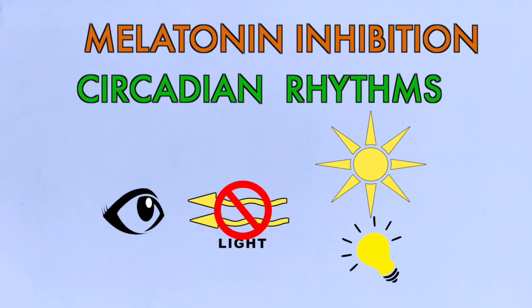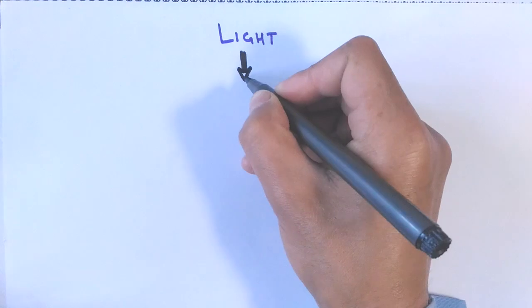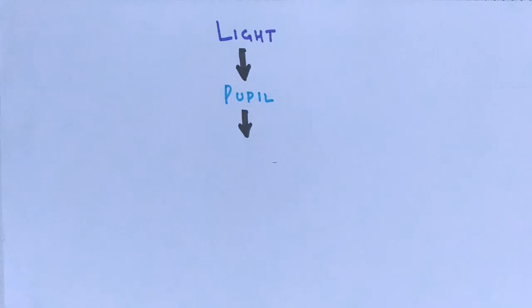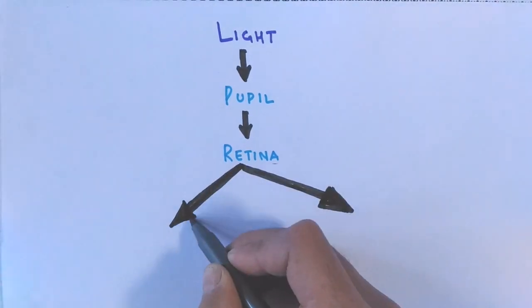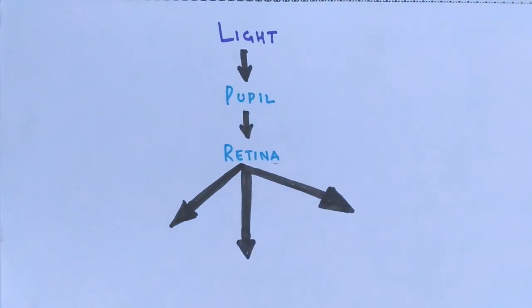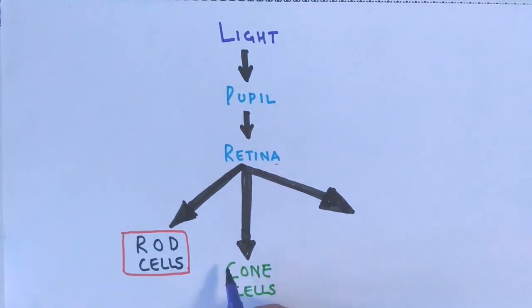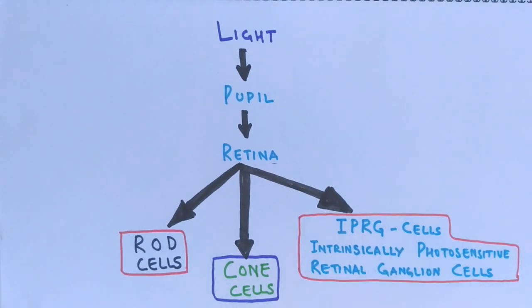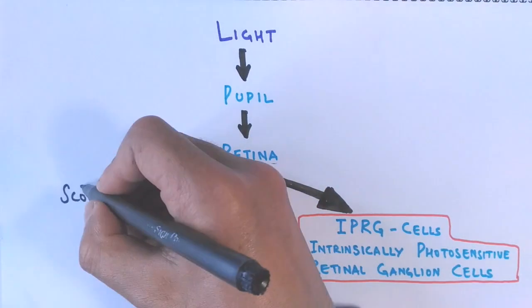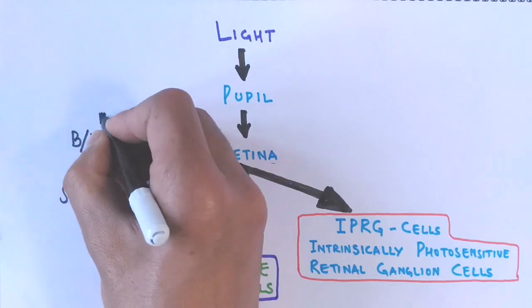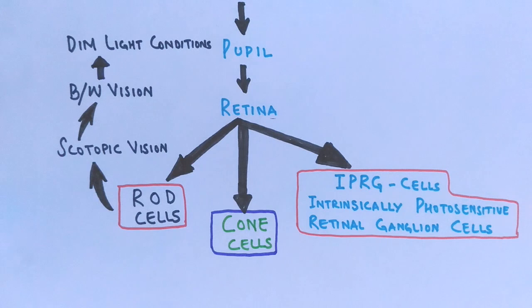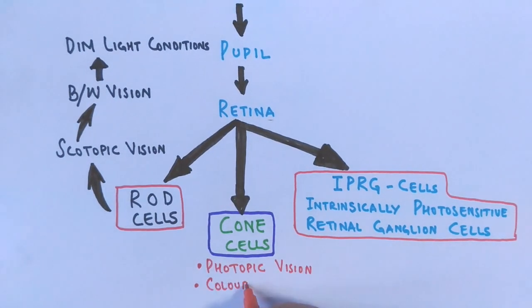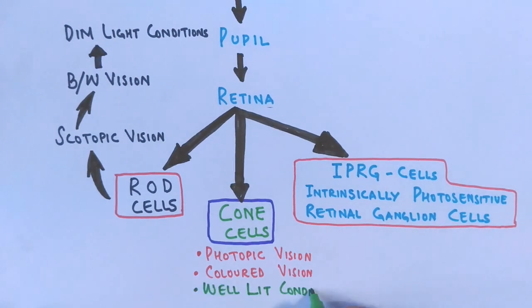Now let's see the pathway of light's interaction with retinal cells. During daytime or under artificial light, light strikes our eyes, goes through the pupil towards the retina. The retina has three different types of photosensitive cells: rod cells, cone cells, and intrinsically photosensitive retinal ganglion cells. Rod cells give scotopic vision — black and white — perceived under dim light. Cone cells give photopic vision — colored vision — perceived under bright conditions like daytime.